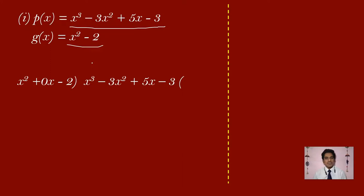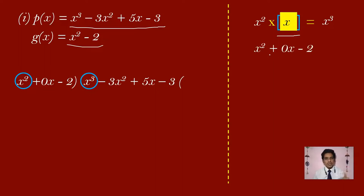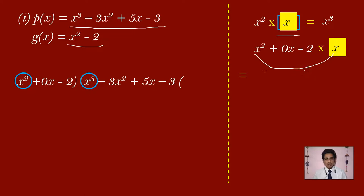We have to consider the first term of the dividend and the first term of the divisor. The divisor's first term is x square. We need x — x cube divided by x square gives x. With this x, you have to multiply the whole divisor x square plus 0x minus 2. So x square into x gives x cube, and 0x into x gives 0x square.